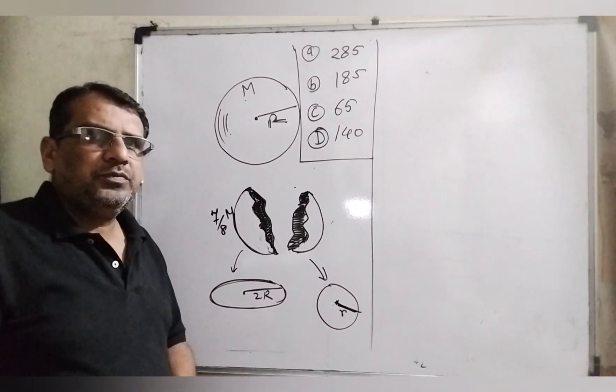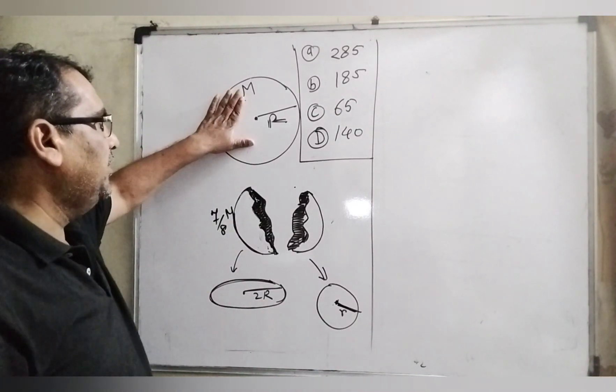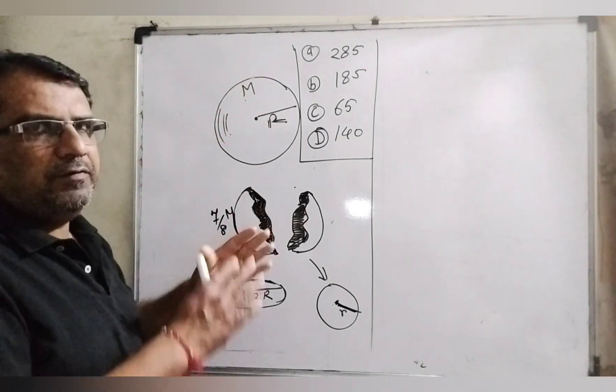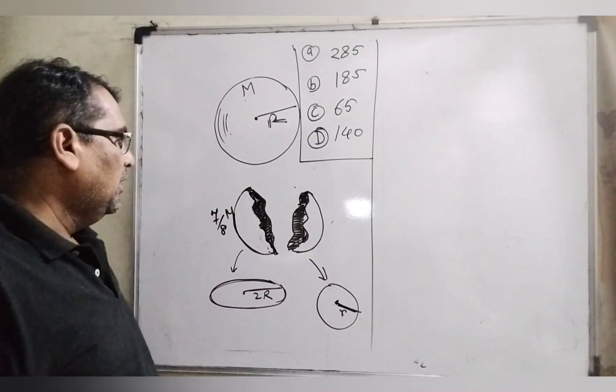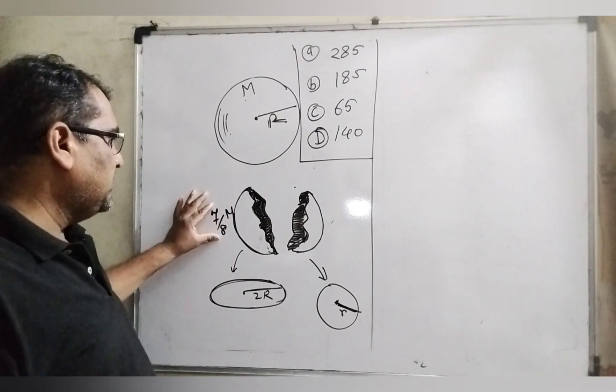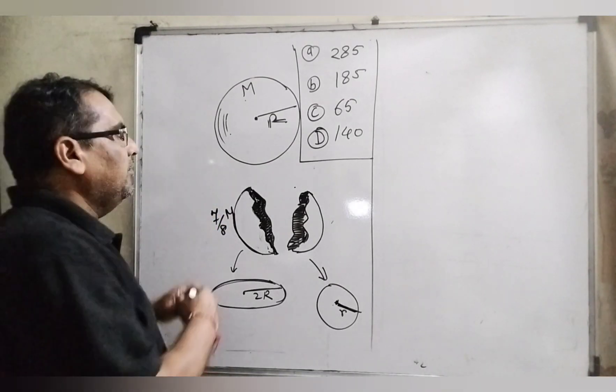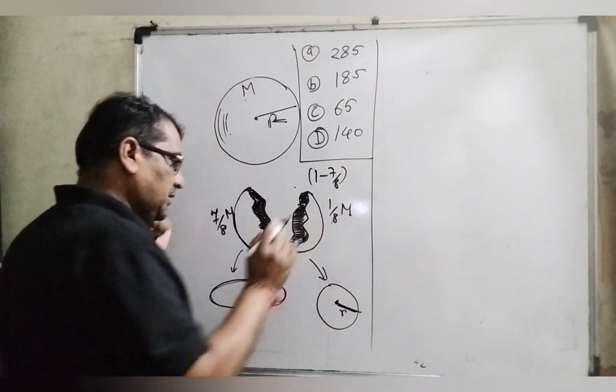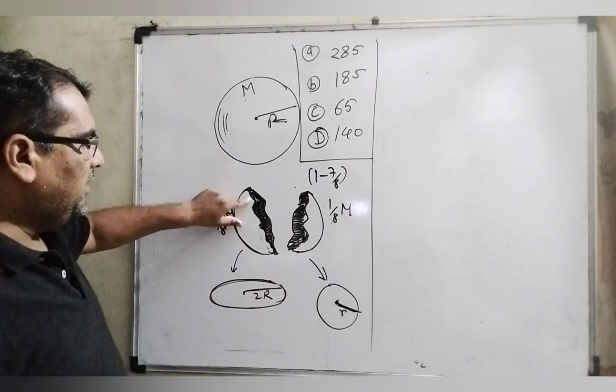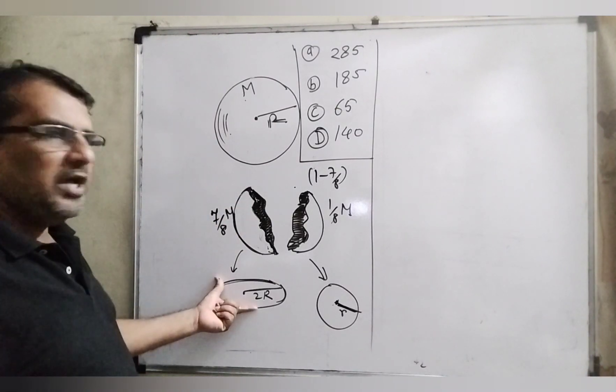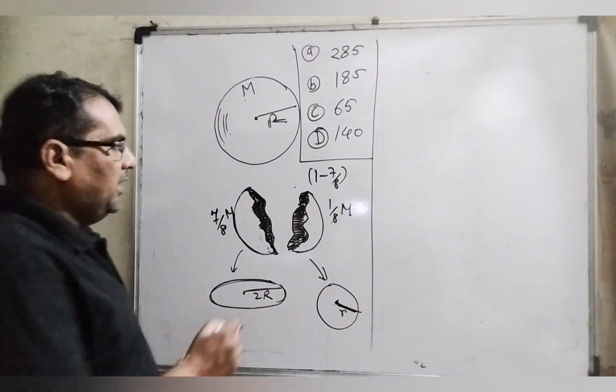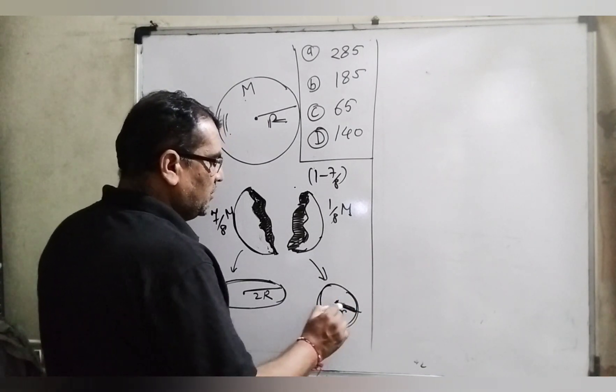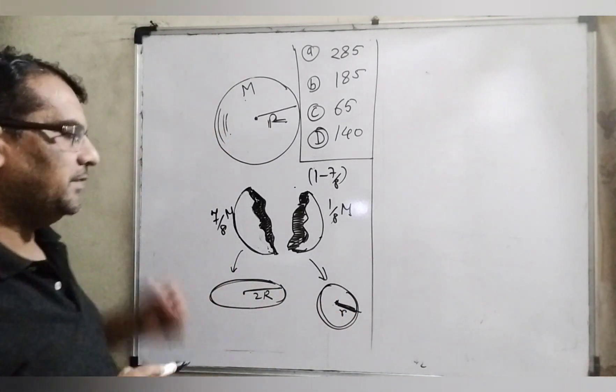Now let's see what the question says. Here you have given a sphere which has mass M and radius R. It is divided into unequal parts. First part has mass 7/8 M and second part 1 minus 7/8 means 1/8 M. It is melted and molded into a disk having radius 2R, and the second part is melted and molded into a sphere, but its radius is not given.